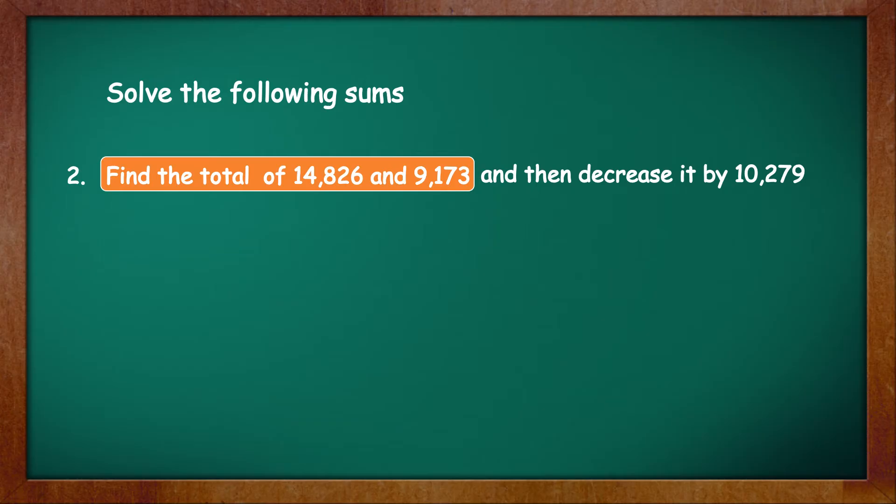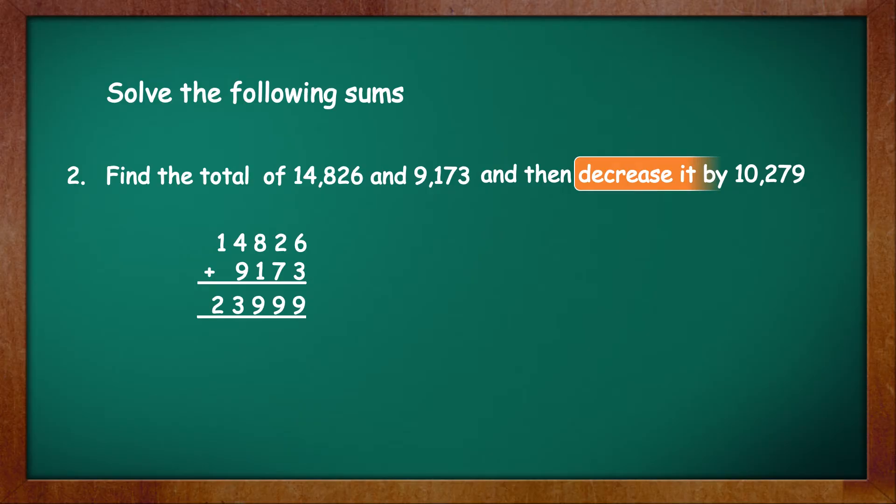So let's find the sum first. 14,826 plus 9,173 is equal to 23,999. Next, decrease this sum by 10,279. That is, subtract: 23,999 minus 10,279, which is equal to 13,720. Therefore, the answer is 13,720.